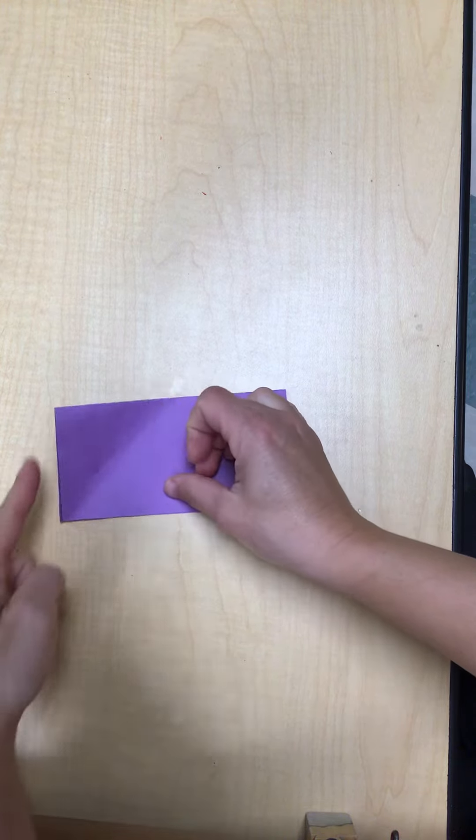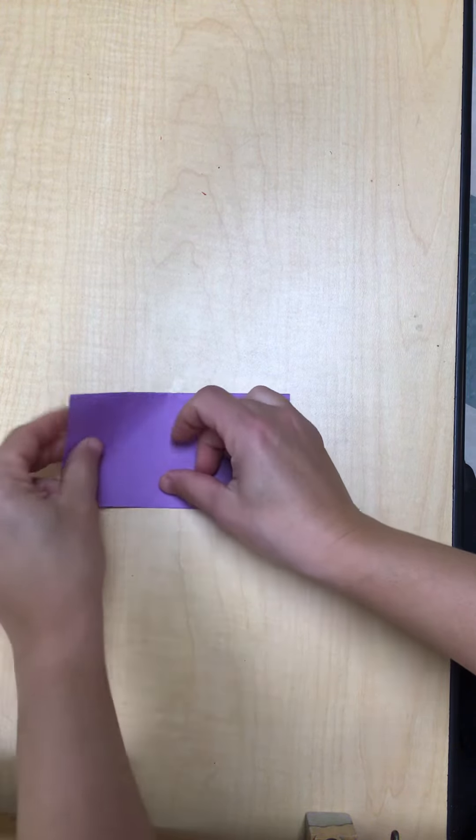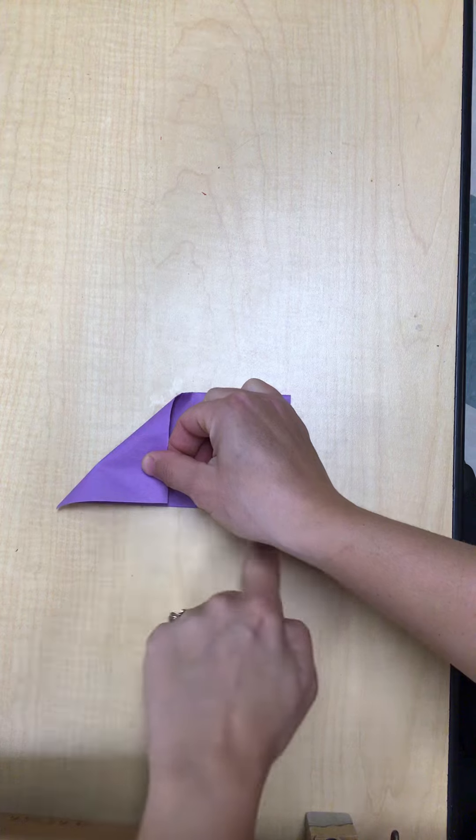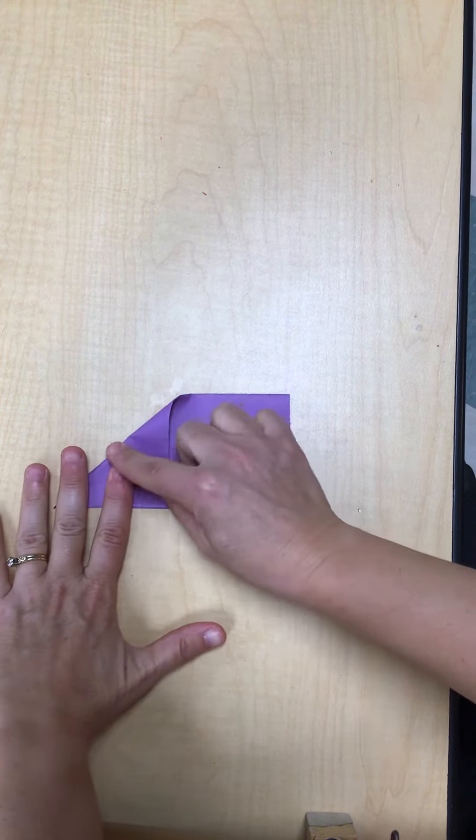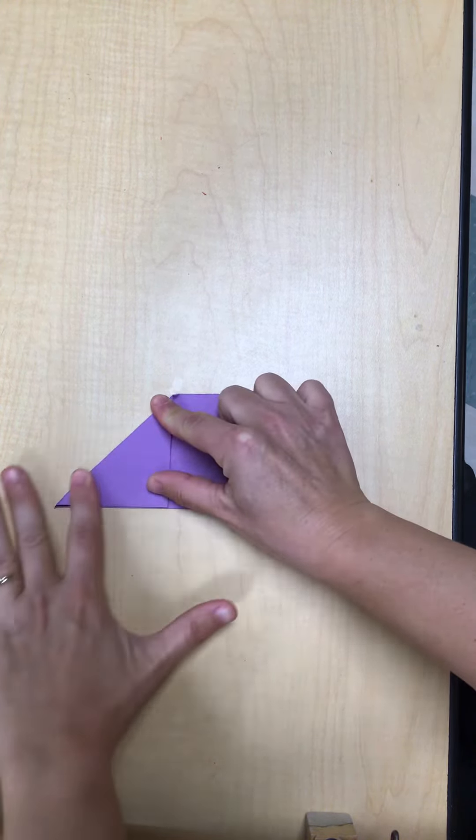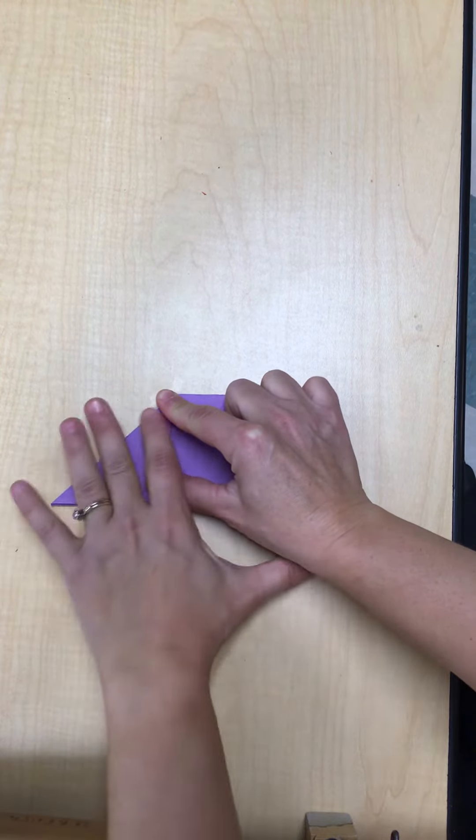And I'm lining up this outside edge right here to the bottom edge of my paper. And then crease your fold right there.